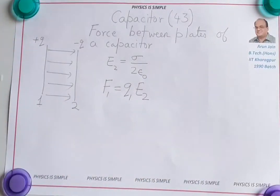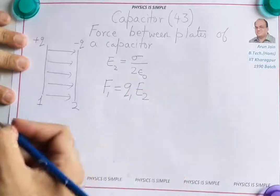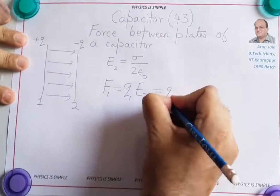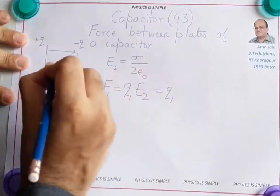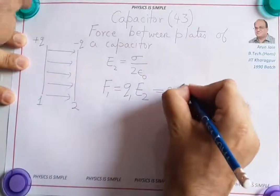Charge on plate 1 is Q1. So Q1, electric field into plate 2 is sigma by 2 epsilon naught.